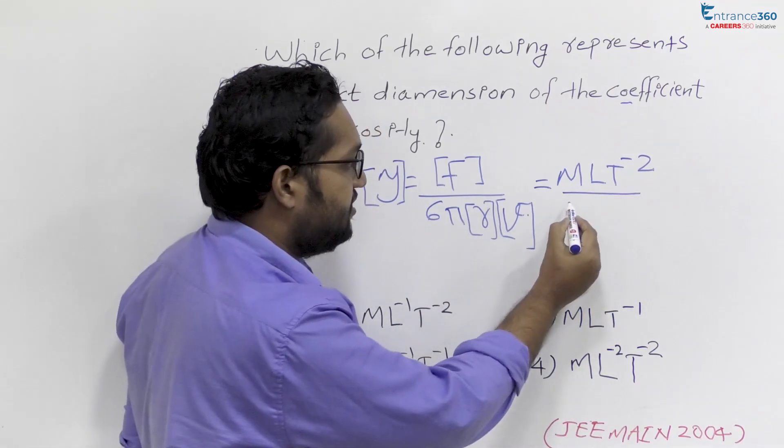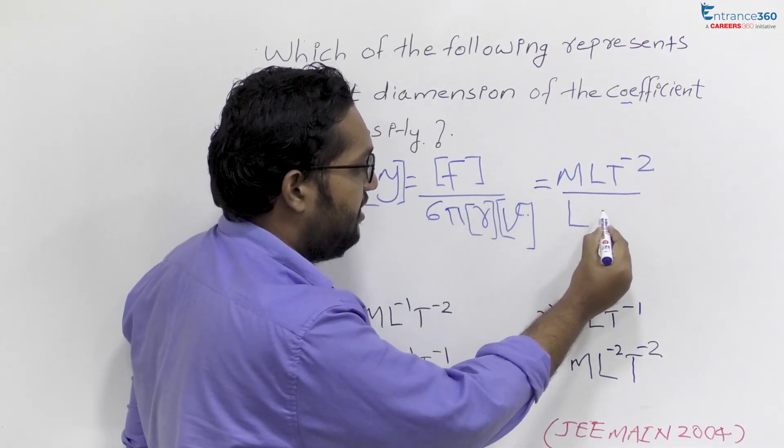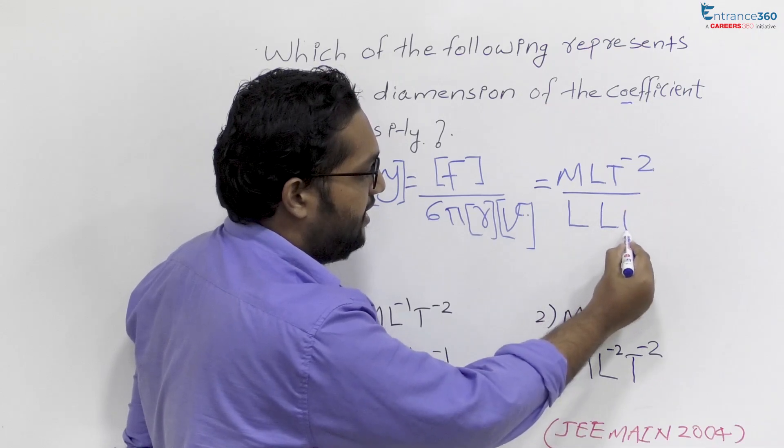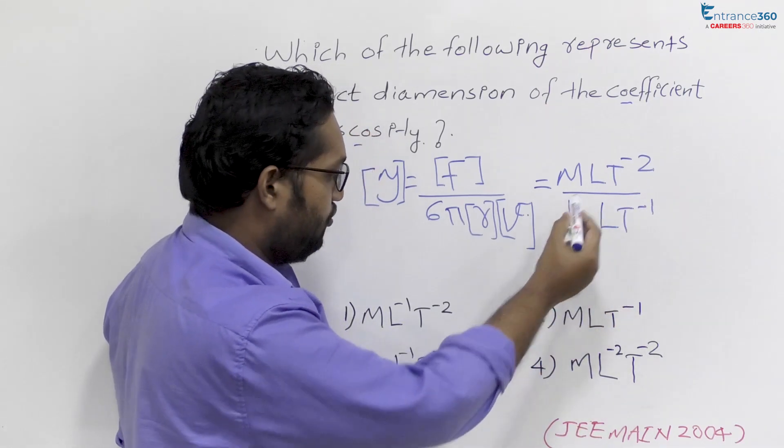which is dimensionless, dimension of R is L, dimension of V is LT⁻¹.